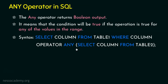If you observe, there are two queries: the outer query and the inner query. The inner query is executed first, returns some values, and those values are used in the condition. The condition — column operator ANY — will be true if the operation is true for any values in the range returned by the inner query.